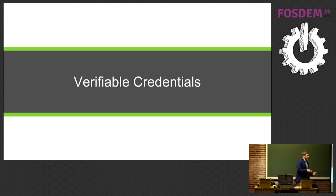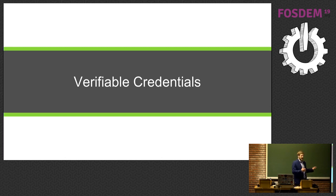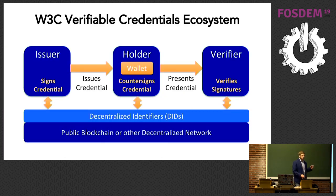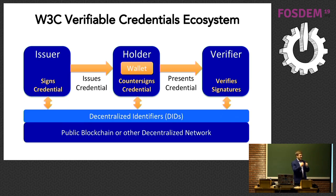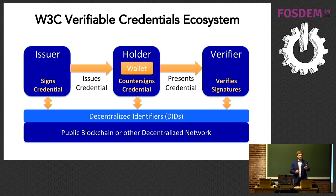What makes self-sovereignty work is that I'm owning credentials — proofs, statements of proof about things that pertain to me — and they need to be verifiable to have meaning. The World Wide Web Consortium has a proposal for a standard on verifiable credentials. It has three main actors: the holder is the person who owns the credential and wants to provide it as a proof to a verifier. The verifier needs to look at that proof and say do I trust it or not. The issuer is the one who signs the credential and gives it to the holder.